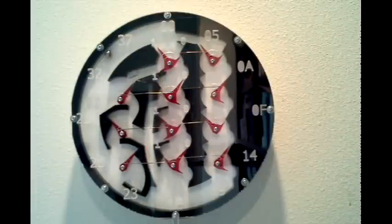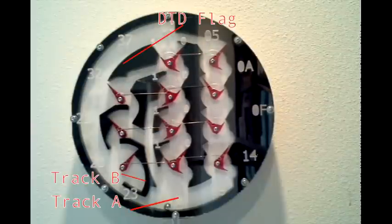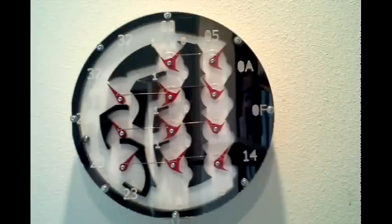The clock also contains a control unit in the form of two tracks, A and B. The ball will go to either track based on the condition of the DTD flag, which is set whenever register C is equal to 11.